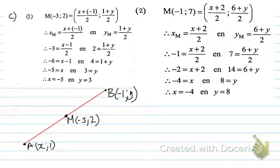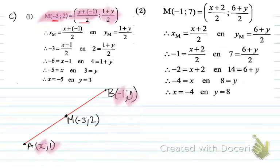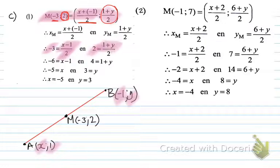This is the type where they give me the midpoint. The midpoint is (-3, 2), so I set up: (x + (-1)) / 2 for the x-coordinate and (1 + y) / 2 for the y-coordinate. The x-coordinate gives: -3 = (x - 1) / 2. Multiplying by 2: -6 = x - 1, so x = -5.